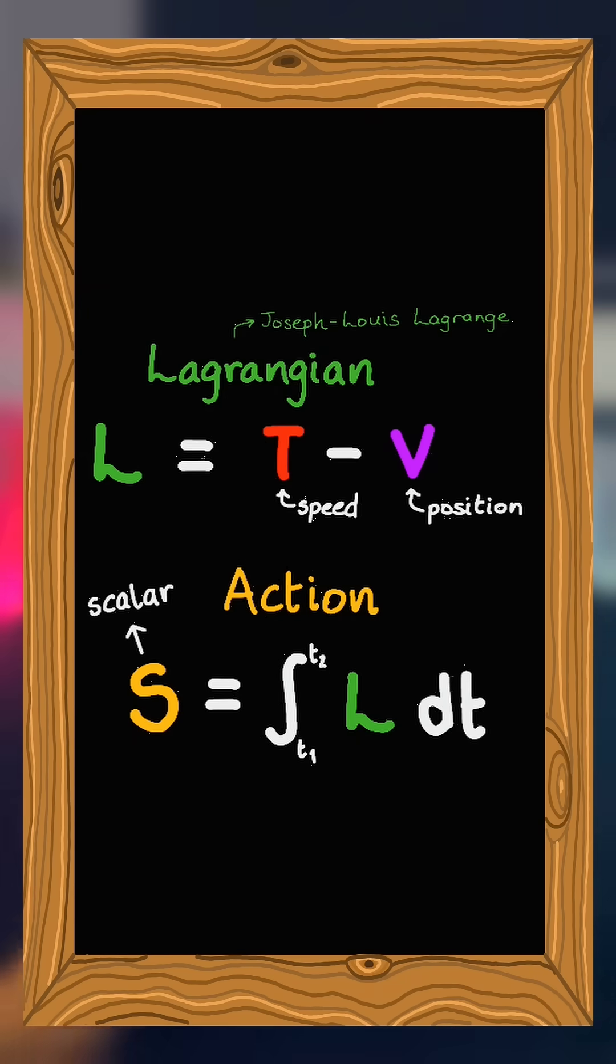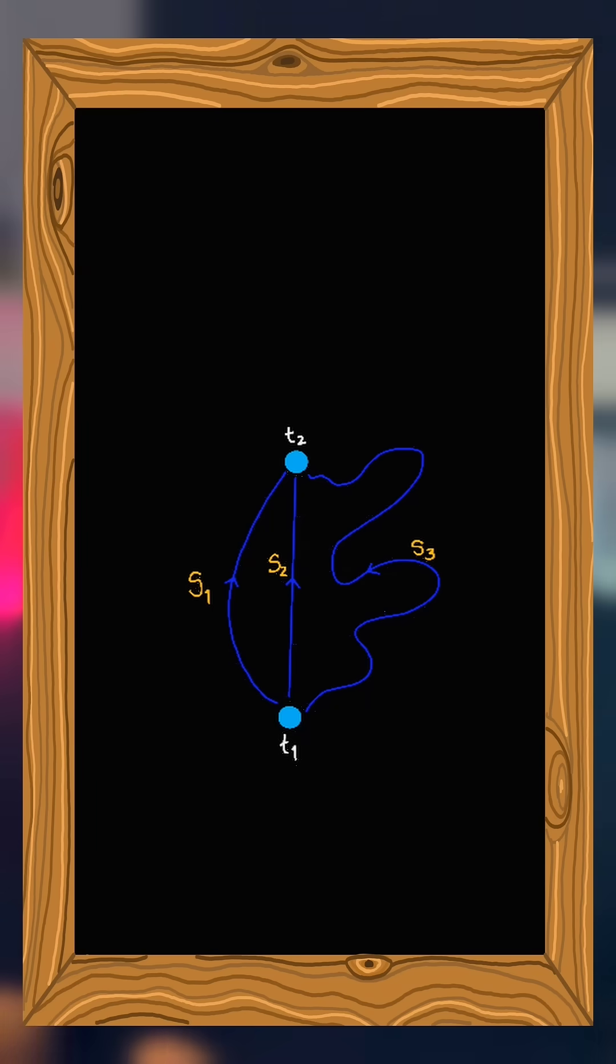Therefore, different values of S represent different trajectories that the particle can take. The trajectory that our particle actually ends up taking is the one for which the value of S is the smallest it possibly can be.